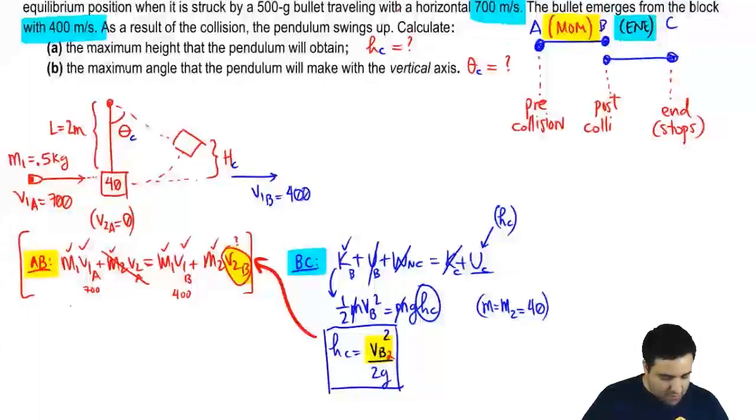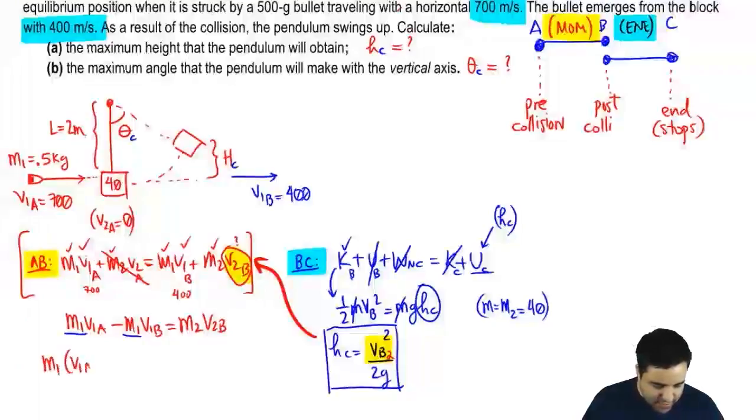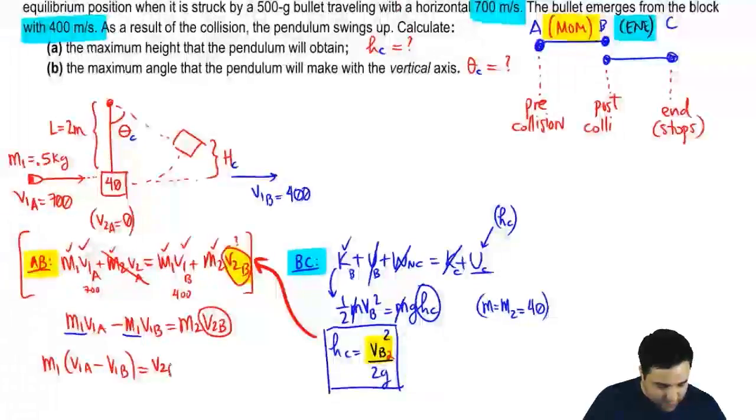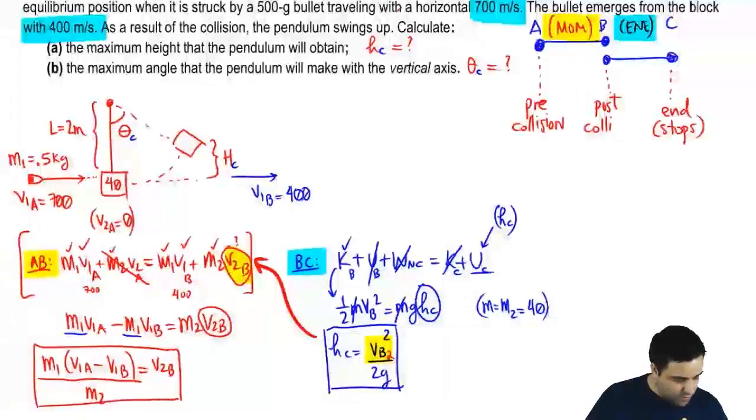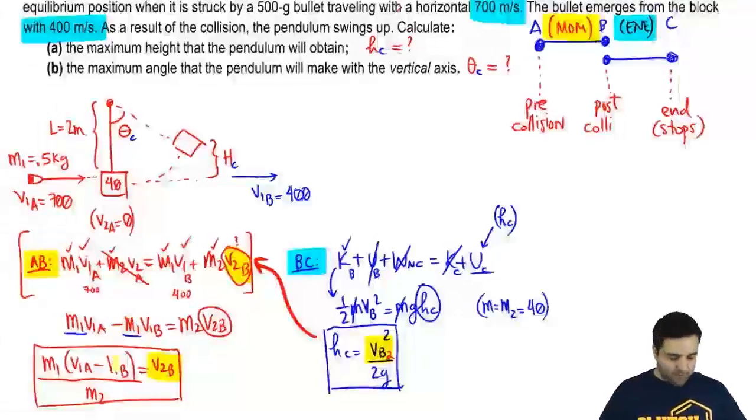So let's start plugging stuff in. So the first mass... Actually, let me just derive this with the letters and then we'll plug it in at the end. Sometimes your professor might want you to do that. So M1V1A, I want this guy by itself, so I'm going to move everything out of the way, minus M1V1B equals M2V2B. Notice here that I have M1 and M1, so I can factor it out. I have M1V1A minus V1B equals M2V2B. V2B is what I want, so I'm going to divide both sides by M2. And V2B, which is what I wanted right here, I can find by plugging in these numbers. Cool? So let's do that.